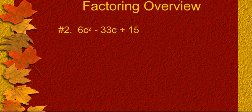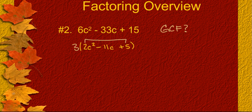In example number 2, first thing we need to do is check for a GCF. 6, 33, and 15 can be factored by the number 3. So, once we take out a 3, I'm looking at the trinomial of 2c squared minus 11c plus 5. Now that that's taken care of, we still have three terms. So, we're going to multiply 2 times 5, and that's going to give us a positive 10.